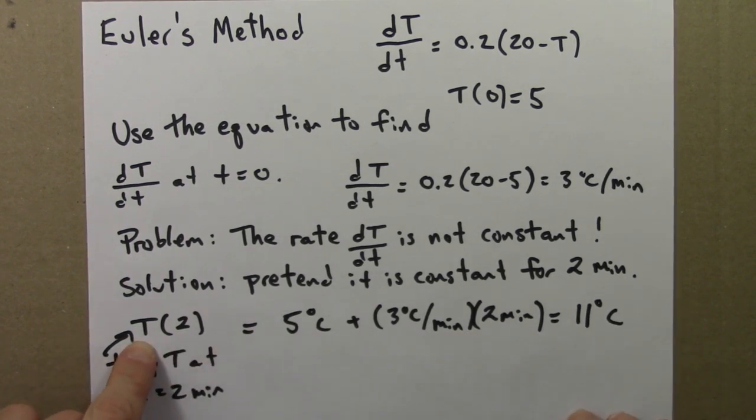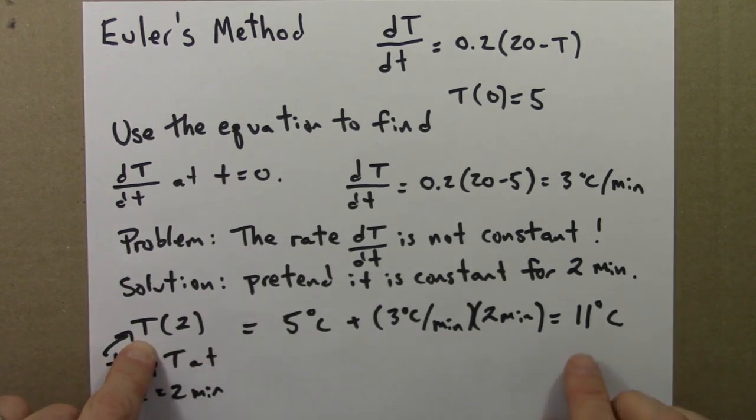And in this way, I've figured out T of 2. It's probably not accurate, or it's probably not exact, because we had to do a little bit of make-believe. But it actually isn't that bad. We can do a similar thing to get T of 4. Let's give that a try.